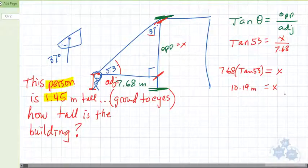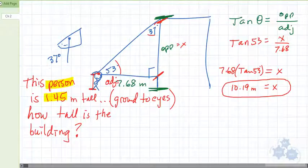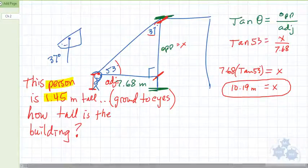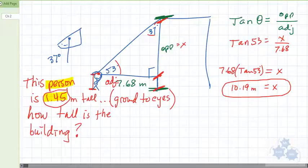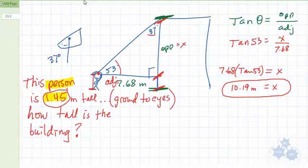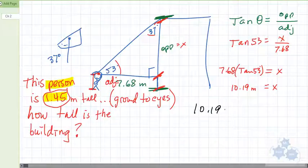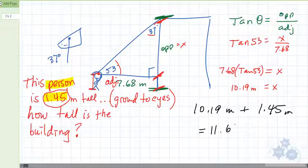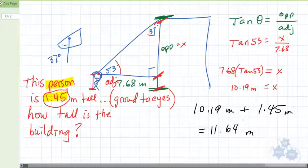10.19 meters. Now, is that the height of the building? It's not. No. Why not? What else have we got to do? Yes, exactly. We have to add up this space right here because we haven't found that. But we know that this person is 1.45 meters tall. So that is not the height of the building. We're not finished yet. Instead, we take 10.19 meters and we add the 1.45 meters, which gets us 11.64 meters.